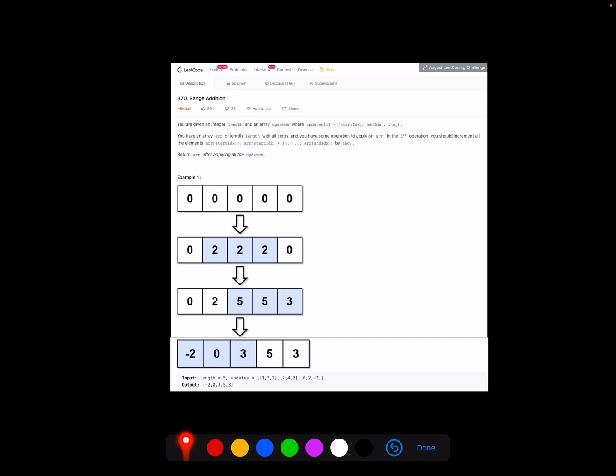So let's look at the problem first. We are given an integer length for the array and it will start with all zeros. Then we are given the updates. Each update consists of start and end and increment values. So we need to follow all the steps in the update list, then output the resulting array.